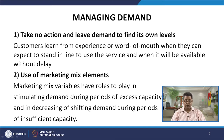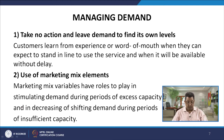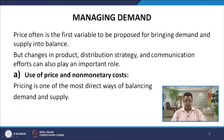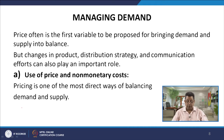The second approach is the use of marketing mix elements to smoothen out demand. Marketing mix variables play roles in stimulating demand during periods of excess capacity and in decreasing or shifting demand during periods of insufficient capacity. Changes in product, distribution strategy, and communication efforts all have an important role in smoothening demand — reducing it during peak periods and increasing it during weak periods.